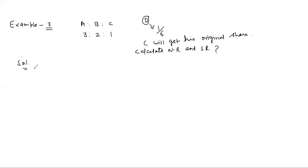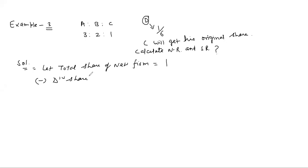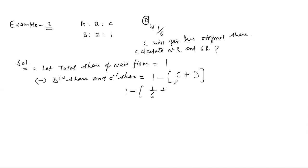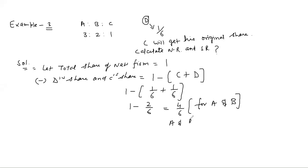To solve this case: let total share of new firm = 1. From this, first subtract D's share — D's share is fixed. Also subtract C's share — C's share is also fixed because C is not ready to sacrifice. So in this case, from 1, subtract both C's and D's shares. C's share is 1/6 and D's share is also 1/6. So from 1, subtract C and D's total of 2/6. The rest — 4/6 — remains for A and B.